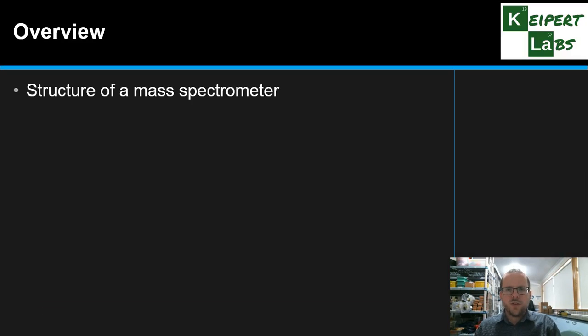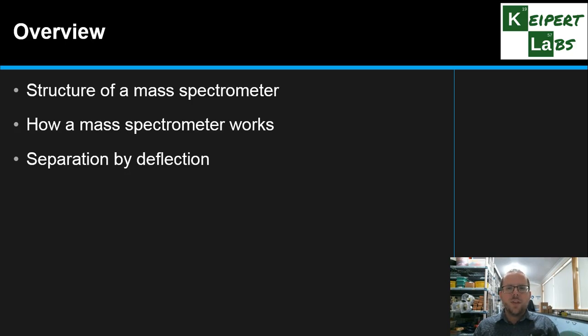We're going to talk a little bit about the structure of a mass spectrometer and how the different components in that instrument are put together. We'll talk about then how they function together to make it work. We'll look at the physical principle that involves separating the components, which is separation by deflection, and then look at interpreting the mass spectrum that results.